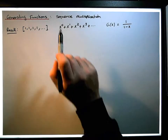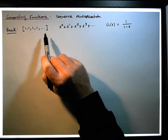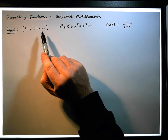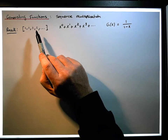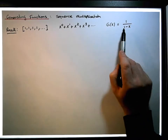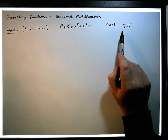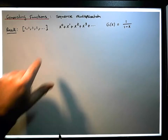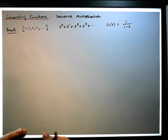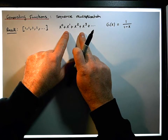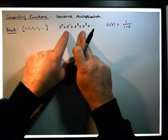What we're interested in is: if you're given two sequences and you multiply the two sequences together, what are their associated generating functions? We'll effectively be multiplying two power series together.